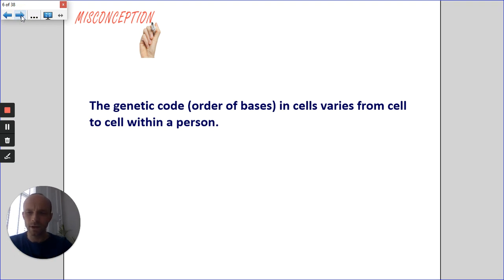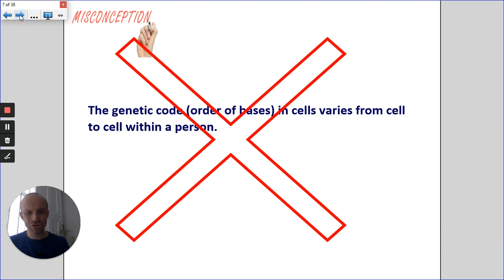Well, this is quite a common misconception. Some people think that the actual order of the bases or the genetic code changes as the cell becomes specialized. Now, that is just not true. The DNA is the same, as we said at the right at the start from mitosis. The DNA in pretty much every single cell in your body and the order of the bases that makes up that DNA is identical. It's the same.